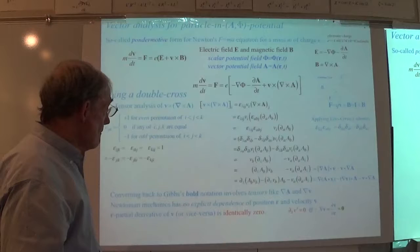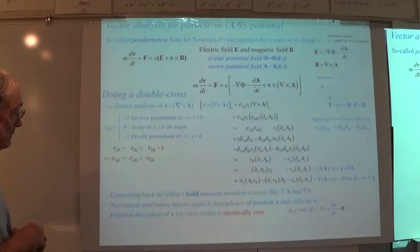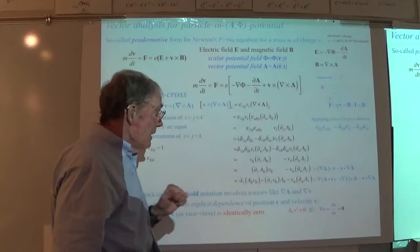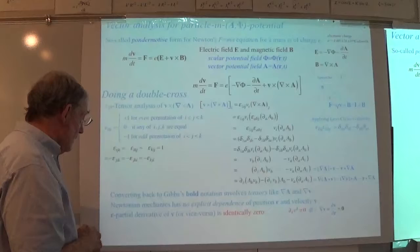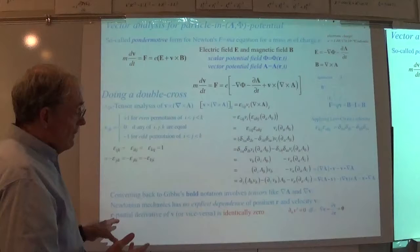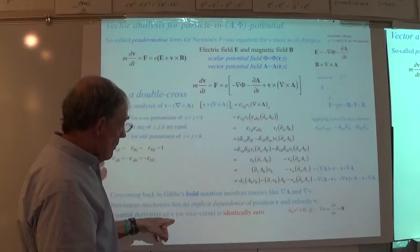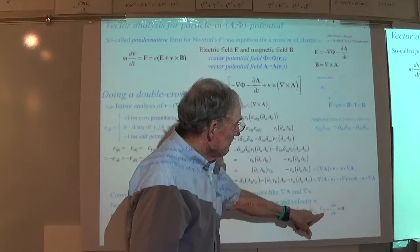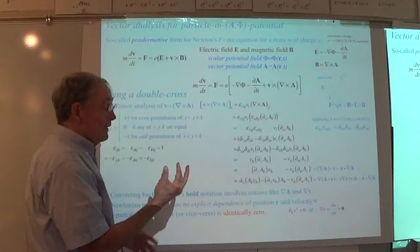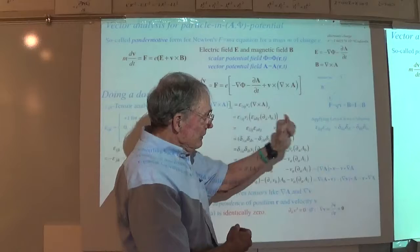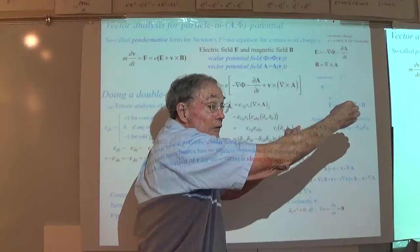Here's the rub — this is what makes it possible to have Lagrange's equations here. Newtonian mechanics has no explicit dependence between position r and velocity v — those really are independent variables. The partial derivative of r with respect to v, or vice versa, is identically zero. From the very beginning of Newtonian mechanics, a particle is placed at an initial position and given an initial velocity — two independent things.